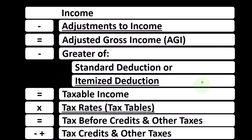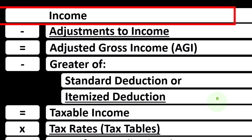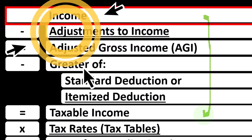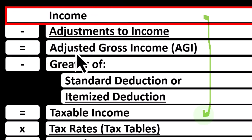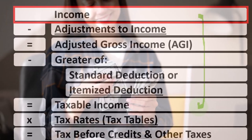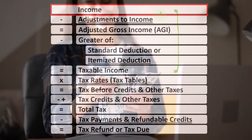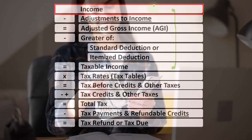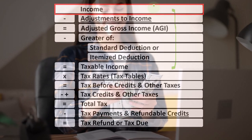Looking at the income tax formula, we're focused on line one income. Remember, the first half of the income tax formula is in essence an income statement, although just an outline, with other forms and schedules flowing into these line items — one of those being the Schedule C, having business income minus business expenses. The net business income from the Schedule C flows into line one income of our income tax formula.